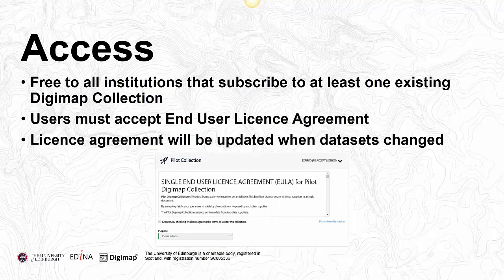Moving on to access — how do you access the new collection? We've already had over 1,500 users access it across different institutions around the country. It is free to access; there's no additional payment or subscription required. All institutions that currently subscribe to any Digimap collection got access to the new pilot collection automatically. The only requirement is that all users need to accept the End User License Agreement, which is different for this collection because it contains different datasets. The first time a user wants to access it, they need to agree to the EULA. When data changes in this collection, the EULA will update and users will need to re-accept it.